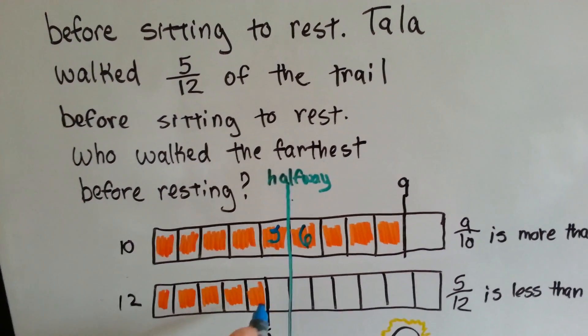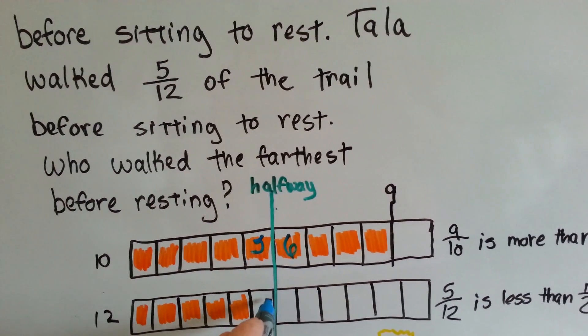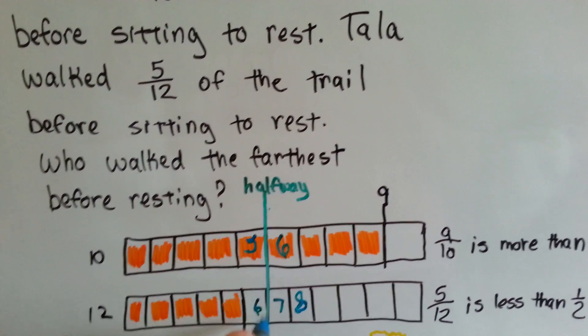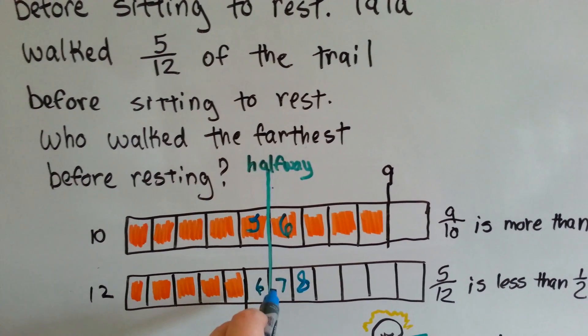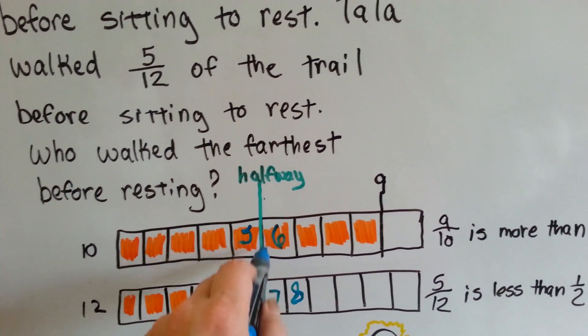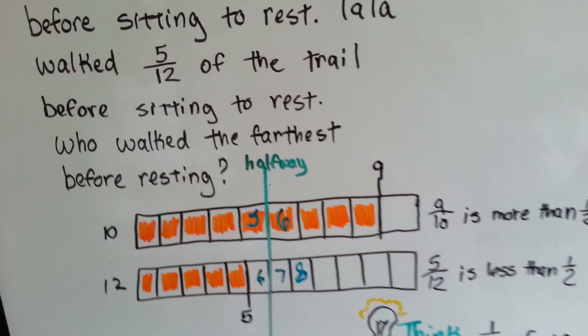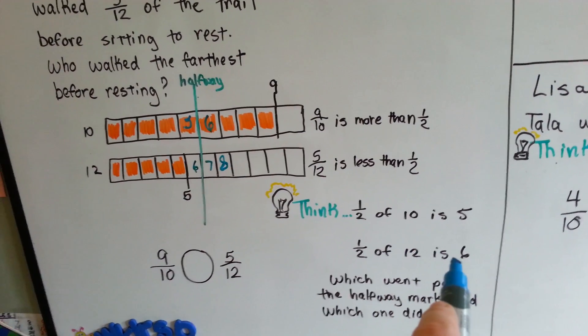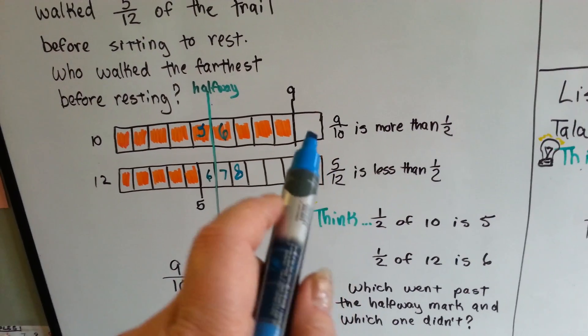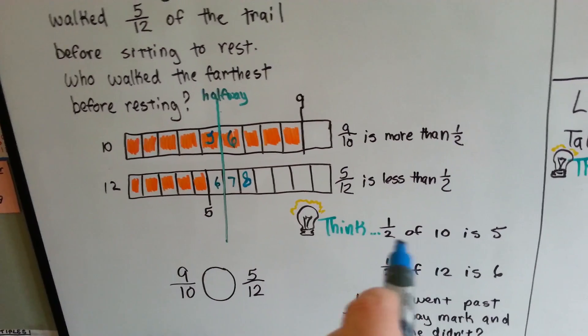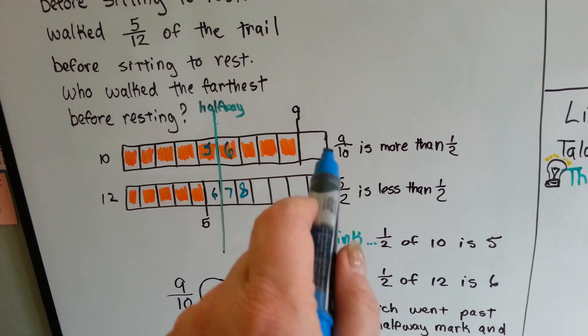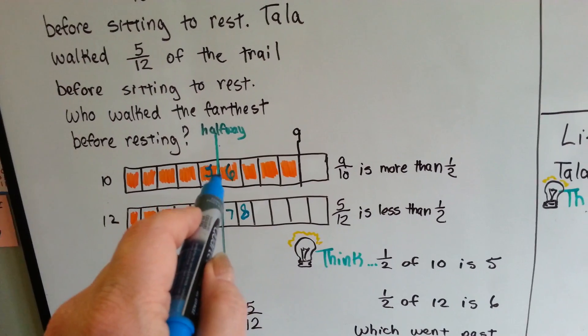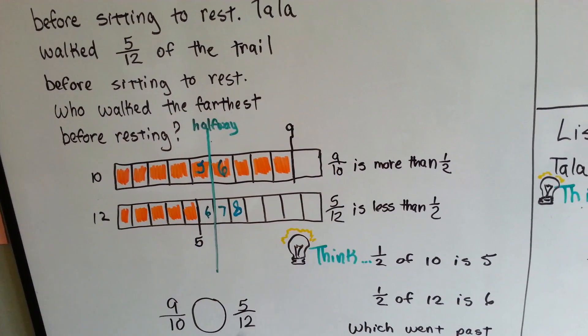And when it's cut into 12, here's the 5, here's 6, 7, 8. So 6 is the halfway point for the 5 twelfths, and 5 is the halfway point for the 9 tenths. Half of 10 is 5, half of 12 is 6. If you've got the half of 10 is 5, and you've got 9 of them, you know you're way past the halfway mark, right? The 5 part is halfway, and you're at 9, you're way past halfway.